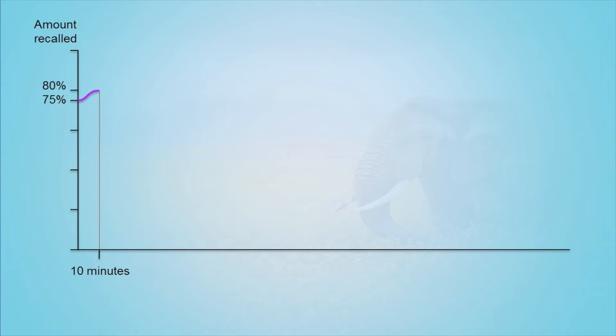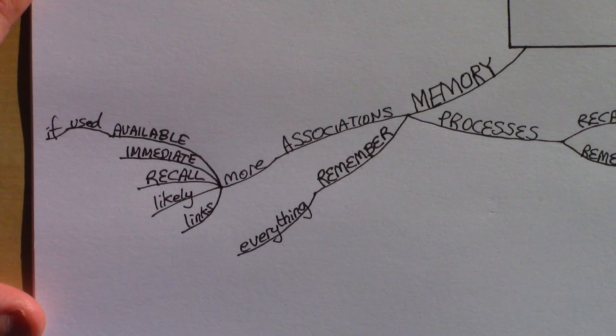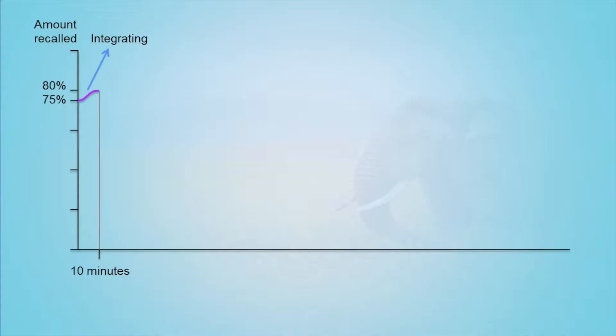Two reasons. One, although at the end of the lecture the brain had all of the information, the brain is still looking at how what was just learned is connected to everything else previously learned and experienced in one's life. This process is called integrating. Reason two is related to this. As we now know, the brain works by association. So the more connections the brain has to a piece of information, the easier and so quicker it is to recall that information.